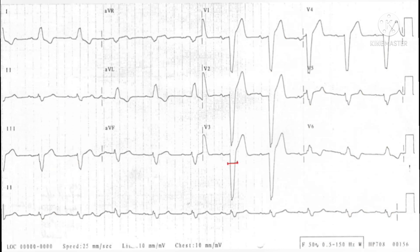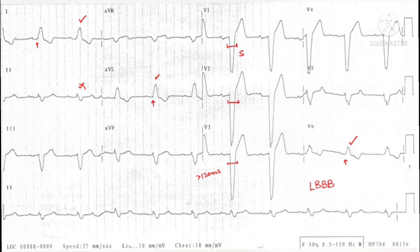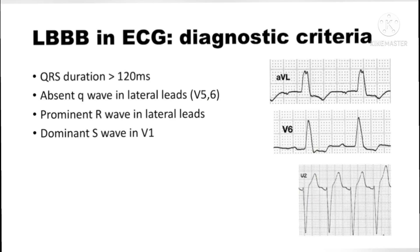On a typical LBBB ECG, the QRS is wide — more than 120 milliseconds. There is no septal Q wave in V6, lead I, and AVL (the left-sided leads). There is a prominent S wave in V1 and V2, and a prominent R wave in the left-sided leads V6, lead I, and AVL. Recapping the diagnostic criteria: QRS width greater than 120ms, absence of Q waves in lateral leads, prominent R waves in left-sided leads, and a dominant S wave in V1/V2.